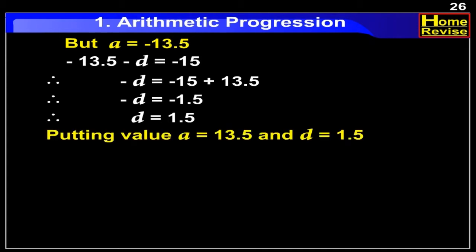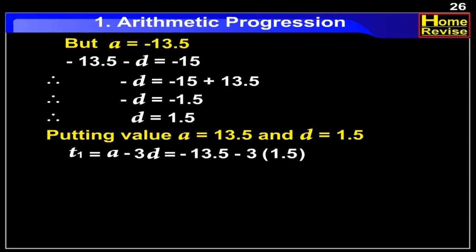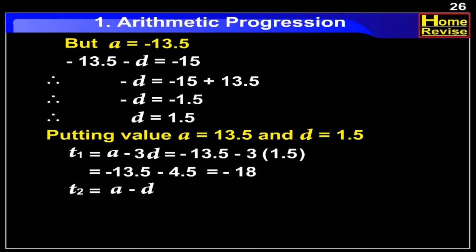Now, putting the values of a and d, we get: t1 (the 1st term) is equal to a minus 3d, which is minus 13.5 minus 3 into 1.5. Similarly, t2 (the 2nd term) is equal to a minus d, which is minus 13.5 minus 1.5, equal to minus 15.